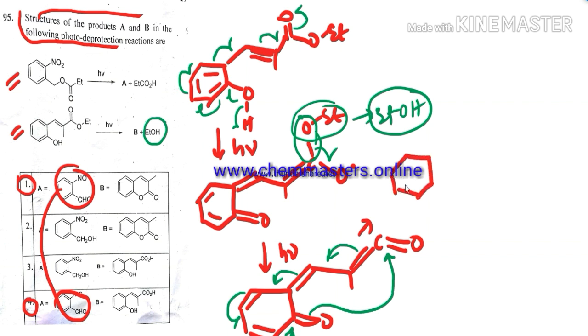If we do that in the next step, we can get here simply O and here C double bond O. Just look at the product here. You can see option B, so option 1 for the given problem is the absolutely correct answer.